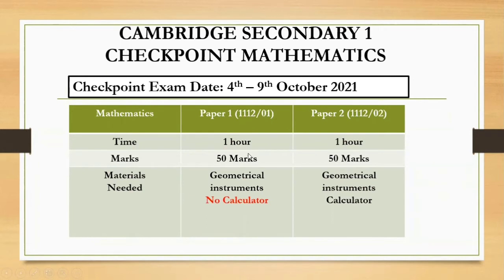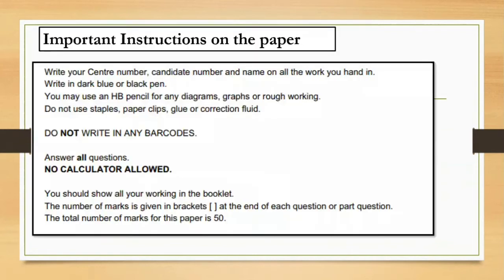The marks for each paper carries 50 marks. The materials needed for Paper 1 — you will only need geometrical instruments and there will be no calculator allowed. For Paper 2, you can use a calculator; in fact, you are required to use a calculator for Paper 2.